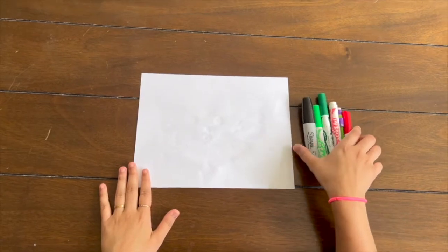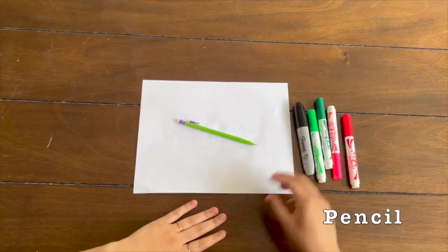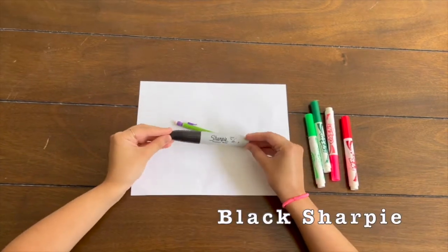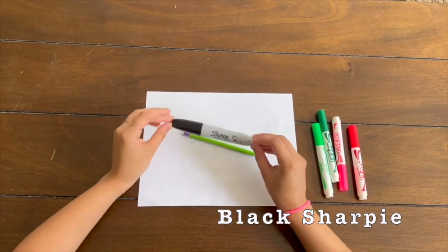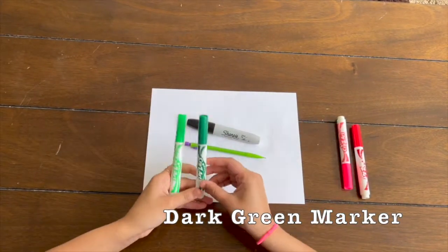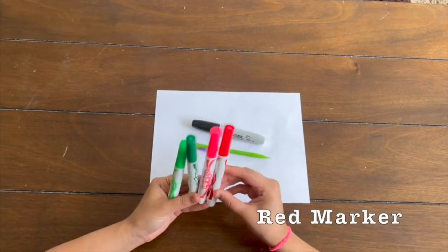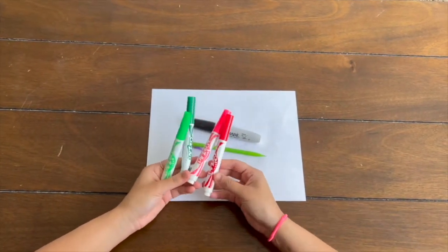So for this really easy drawing tutorial, you're going to need a pencil to trace out your drawing, a black Sharpie or a black marker to outline your drawing, and a light green marker, a dark green marker, a pink marker, and a red marker. You could also use colored pencils or crayons.